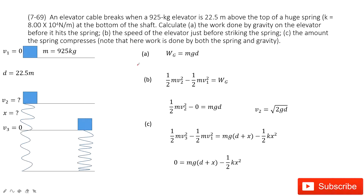I suggest you draw a picture to think out what happens. You can see we have the elevator car, and we consider it as an object. It falls down in free fall, and luckily there is a very strong spring attached to the ground. This object just contacts the spring and reaches velocity v2. The free-fall distance is 22.5m.